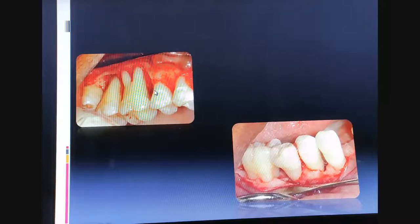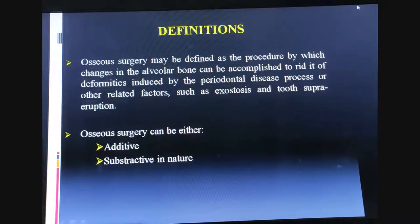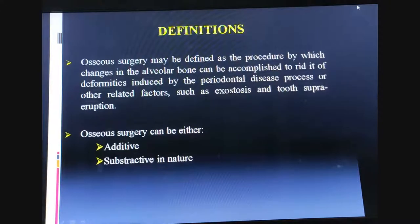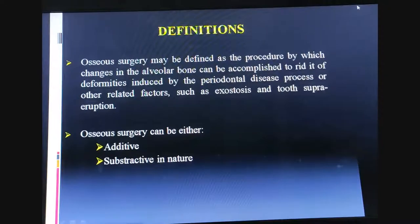Osseous surgery can be defined as a procedure by which changes in the alveolar bone can be accomplished to rid it of deformities induced by the periodontal disease process or other related factors such as exostoses and tooth super-eruption. It is a surgical procedure which helps bring the tooth back to its normal position or correct those deformities.